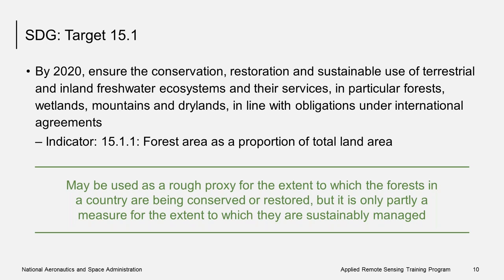SDG Target 15.1 says by 2020, ensure the conservation, restoration, and sustainable use of terrestrial and inland freshwater ecosystems and their services — in particular, forests, wetlands, mountains, and dry lands — in line with obligations under international agreements. This week we will be focusing on Indicator 15.1.1, which is forest area as a proportion of total land area.